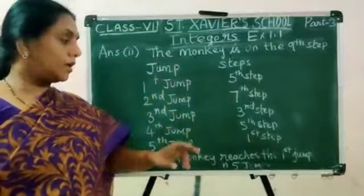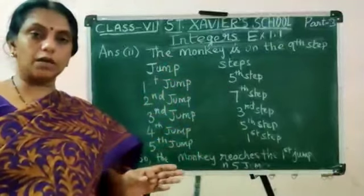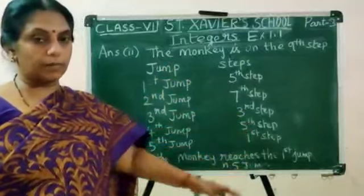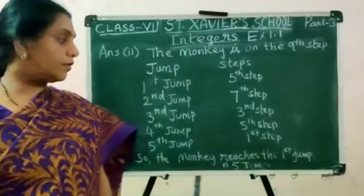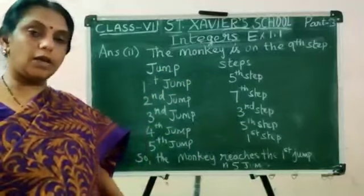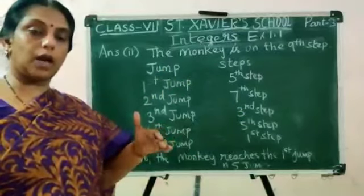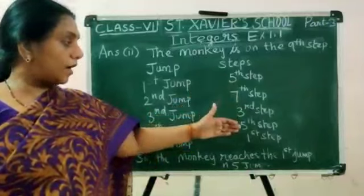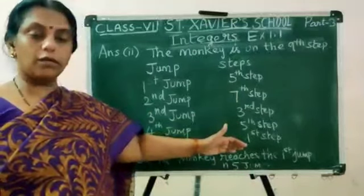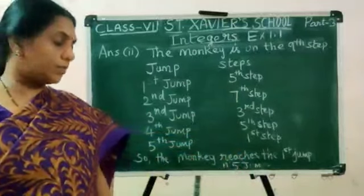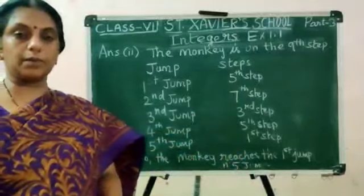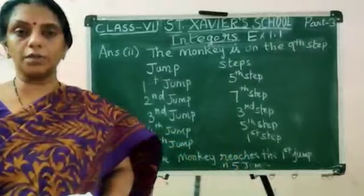From the 3rd step, again it has to go down 2. So 3 plus 2, 5th step. From the 5th step, again it will go back up. So 5 minus 4, it will become the 1st step. So the monkey reaches the 1st step in 5 jumps.